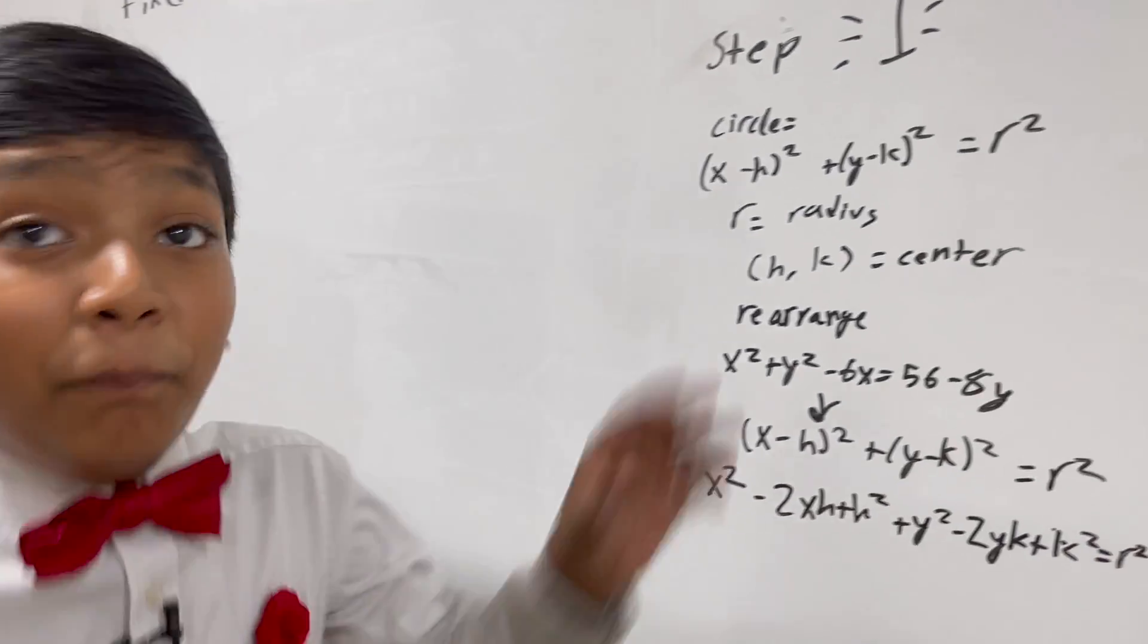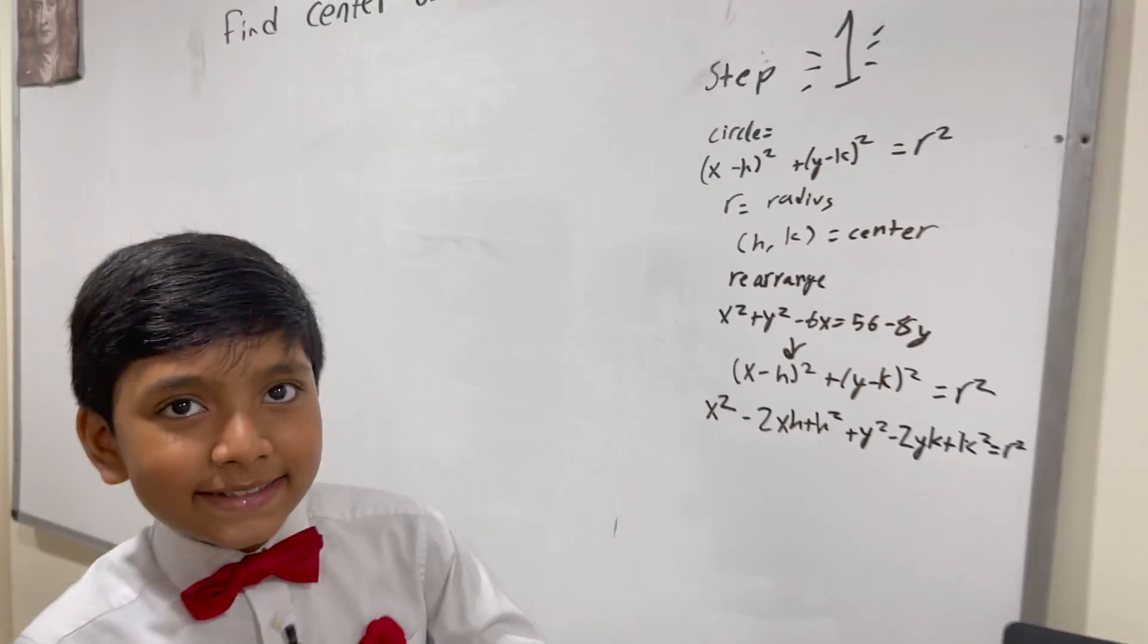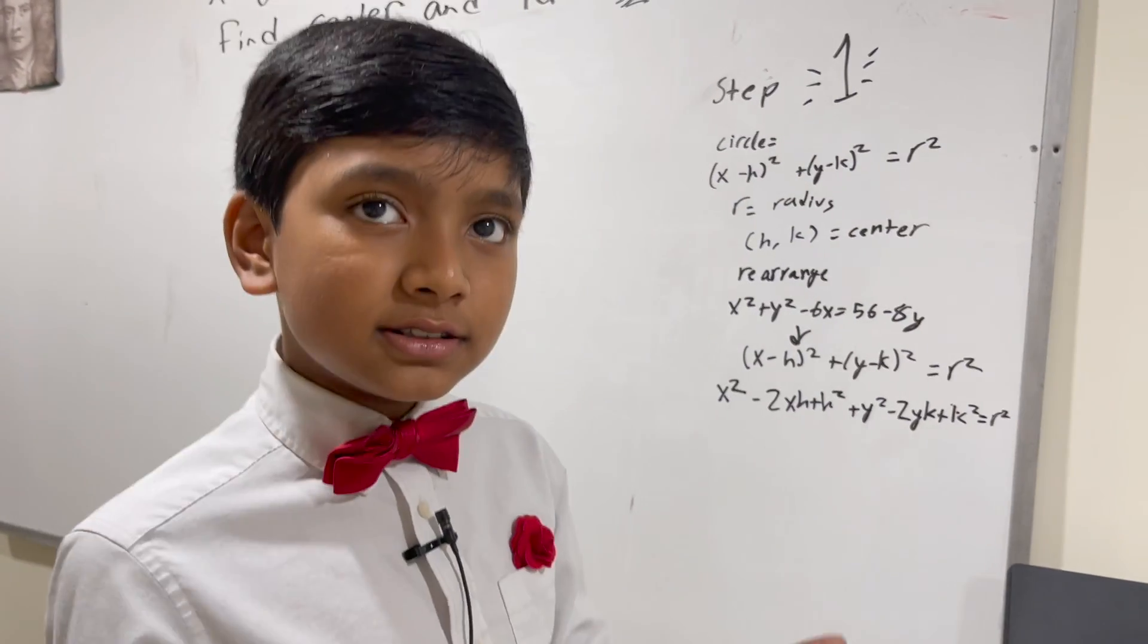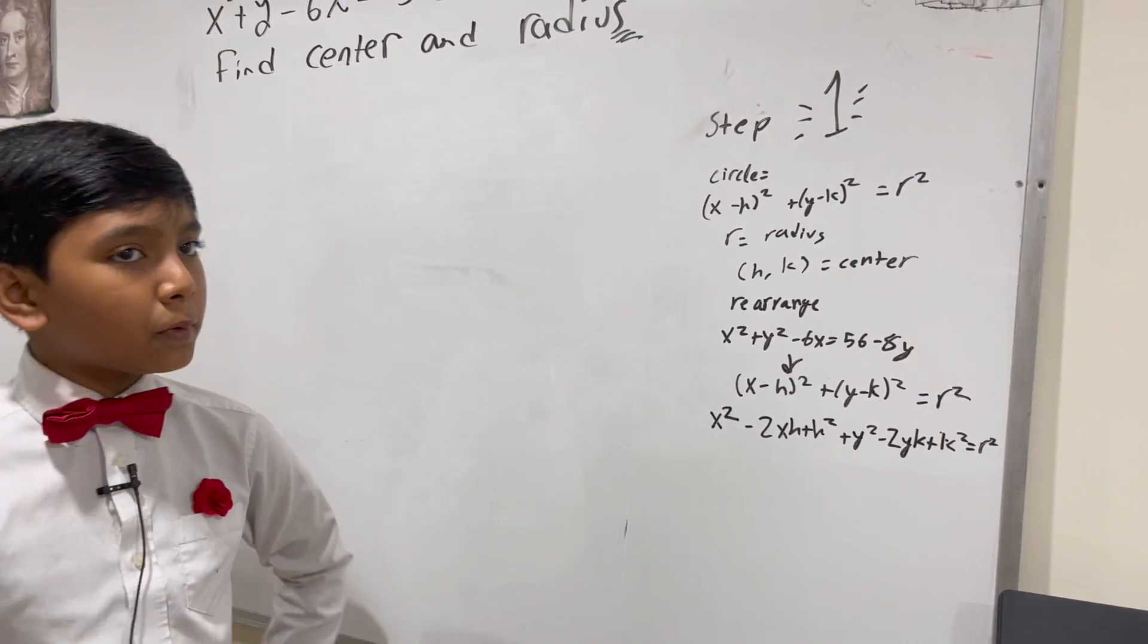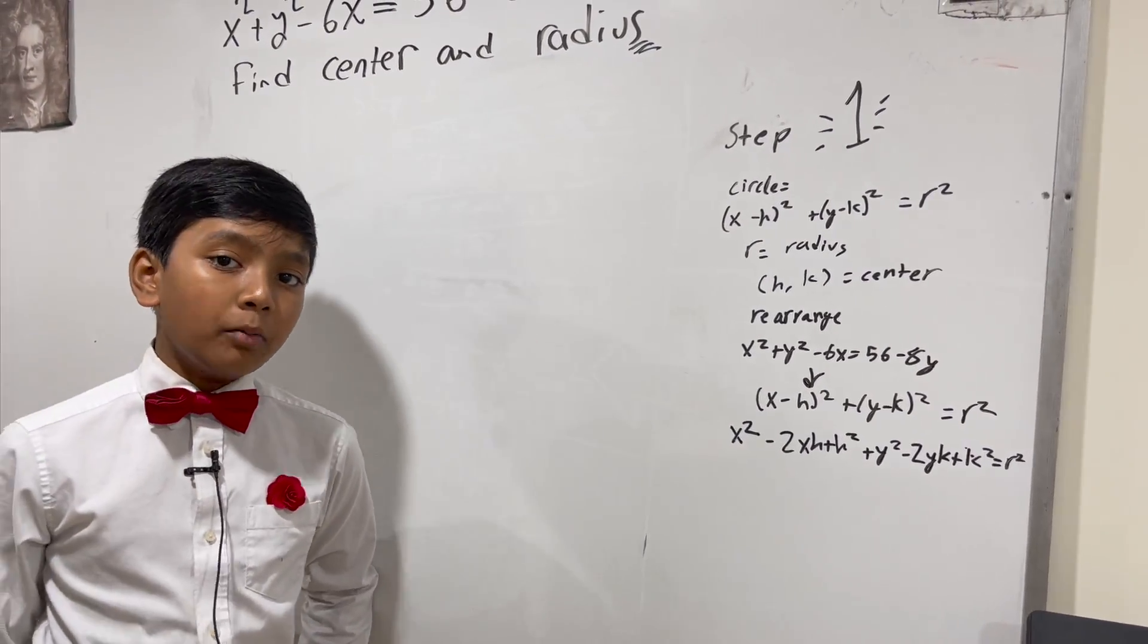X squared minus 2XH plus H squared plus Y squared minus 2YK plus K squared is equal to R squared. Now, this gets even better when you realize H, K, and R are constants. So, that means there are going to be numbers. So, we don't have to worry about more variables.